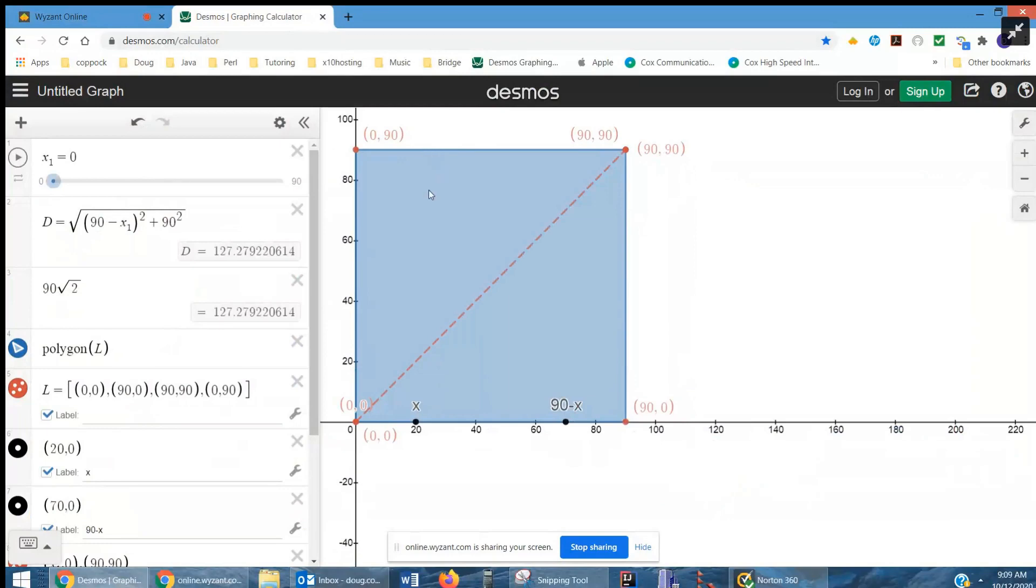From home plate, this runner is running towards first base at a speed of 25 feet per second. And as he moves this way, the distance from the runner to second base is changing.